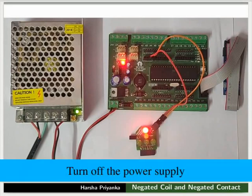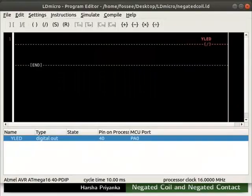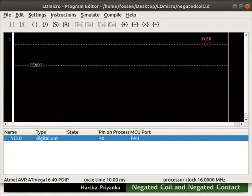Turn off the power supply. Remove the connections made for this example. Next, we will learn about the working of negated contact. Switch back to LDmicro. Instead of creating a new file, we will make changes in the previous file itself.